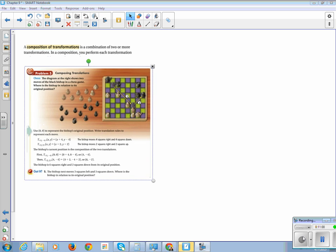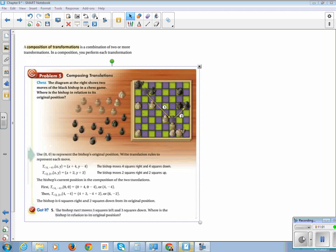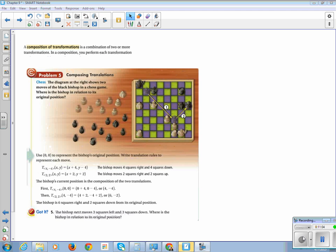Last example. We're going to talk about a composition. Compositional transformation is a combination of two or more transformations. So when we're looking at this chess board, the diagram at the right shows two moves of the black bishop in the chess game. It goes 1 and then 2.